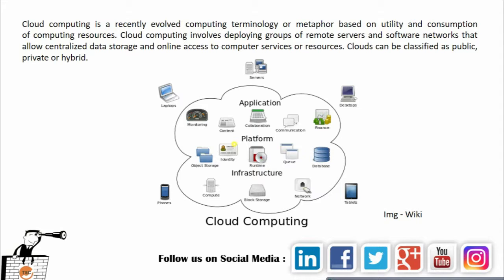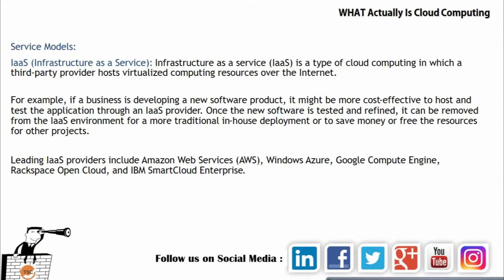Let's understand the three different types of cloud computing service models. The very first is Infrastructure as a Service. IaaS is a type of cloud computing in which a third-party provider hosts virtualized computing resources over the internet. For example, if a business is developing a new software product, it might be more cost effective to host and test the application through an IaaS provider. Once the software is tested and refined, it can be removed from the IaaS environment for a more traditional in-house deployment.